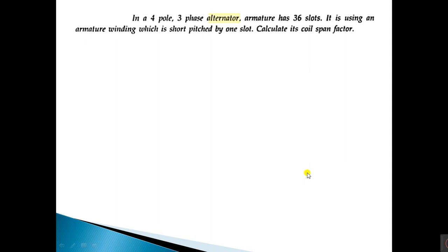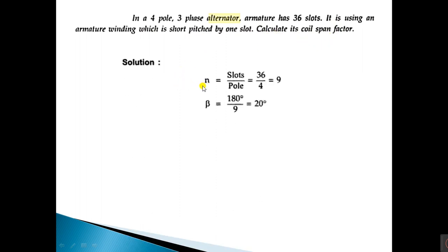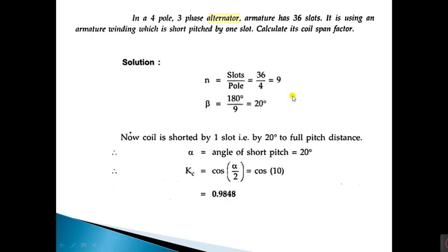Let us see an example based on coil span factor. In a four-pole three-phase alternator, the armature has 36 slots, using an armature winding which is short pitched by one slot. Calculate its coil span factor. First, calculate n — the number of slots per pole: 36 divided by 4 equals 9. Then calculate beta: 180 degrees divided by n, so 180 divided by 9 equals 20 degrees.